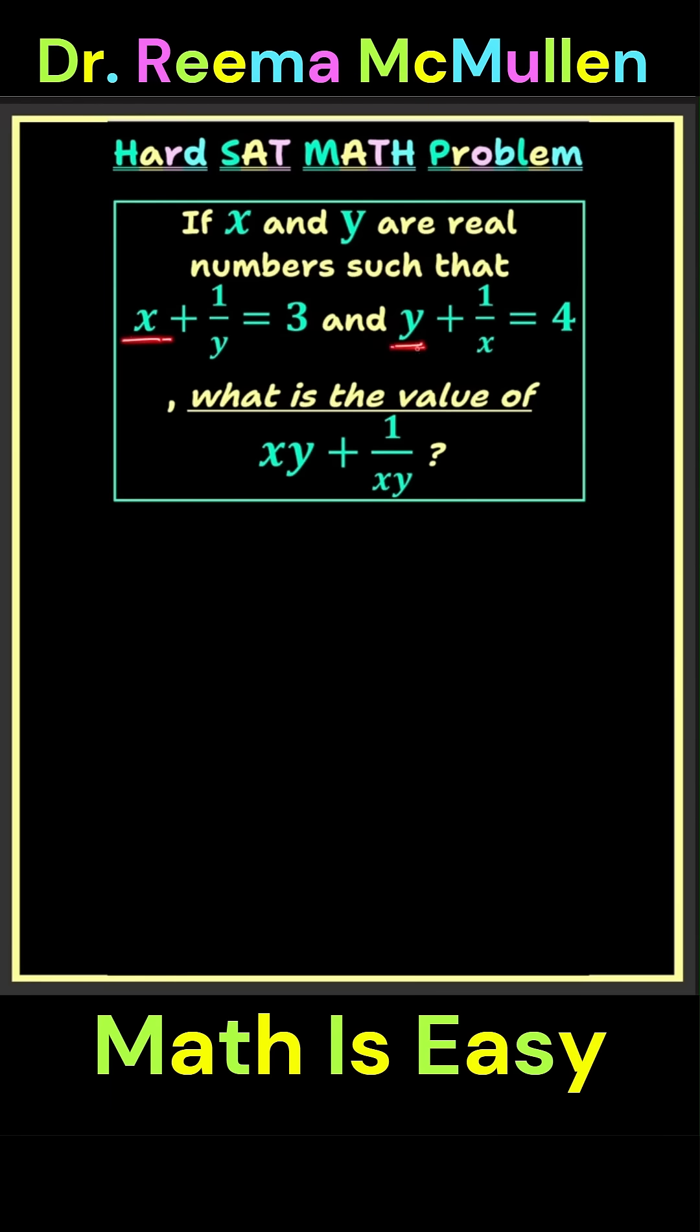This x times y gives you xy, and 1 over y times 1 over x gives you 1 over xy, and that is what we are trying to solve for. How about the cross terms, though? What do they give?